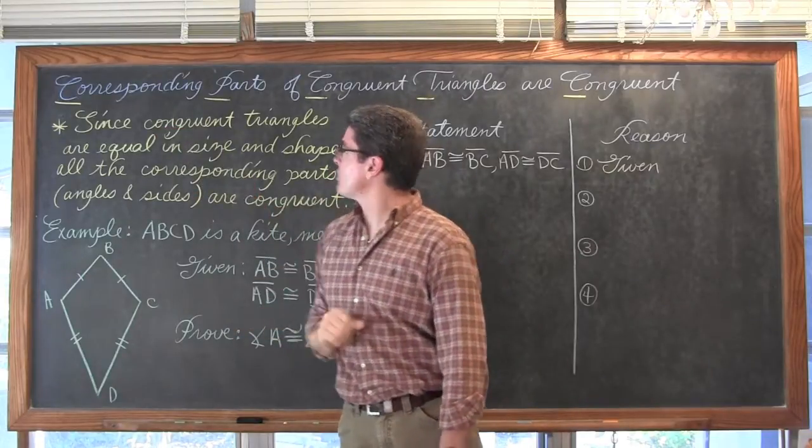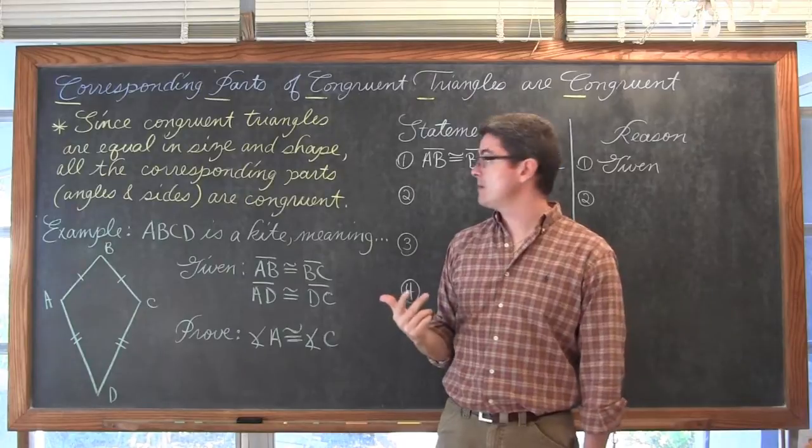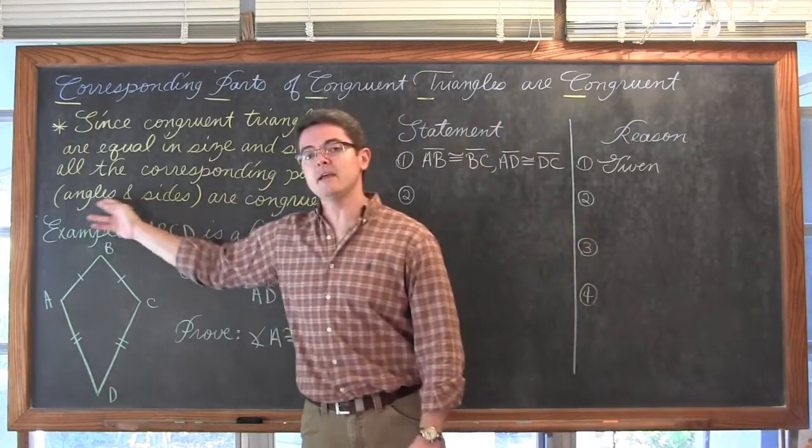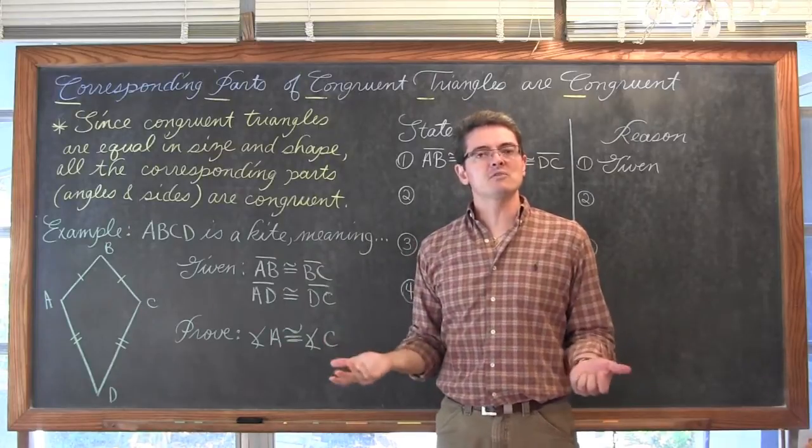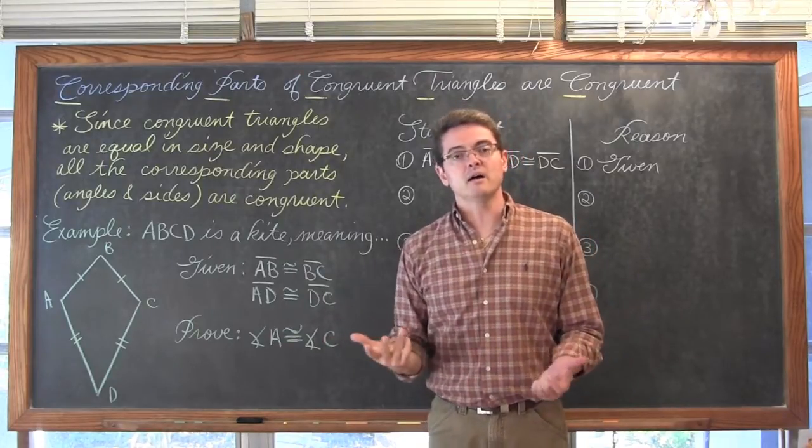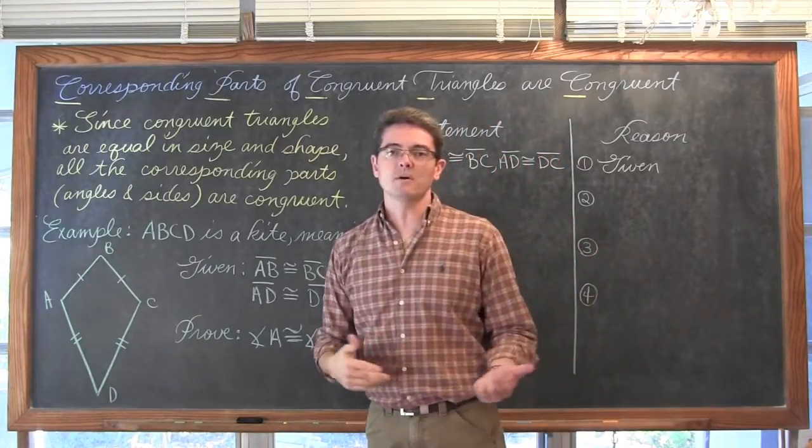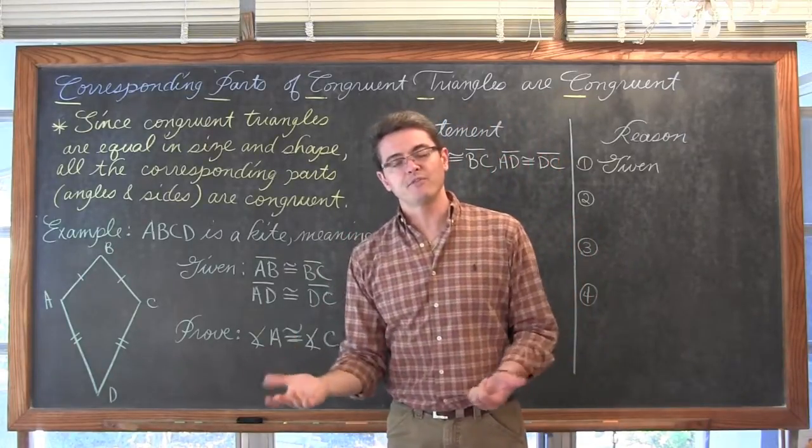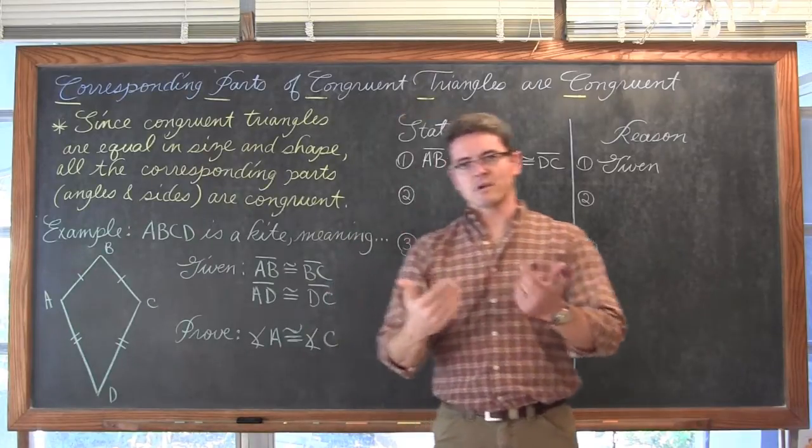It says that since congruent triangles are equal in size and shape, all the corresponding parts, which are going to be the angles and the sides, are also congruent. Which makes sense because when we first started studying congruent polygons that is exactly what we did. We showed all the corresponding angles and all the corresponding sides were equal. When we finished with that we could say that they were congruent, or the corresponding parts are congruent.